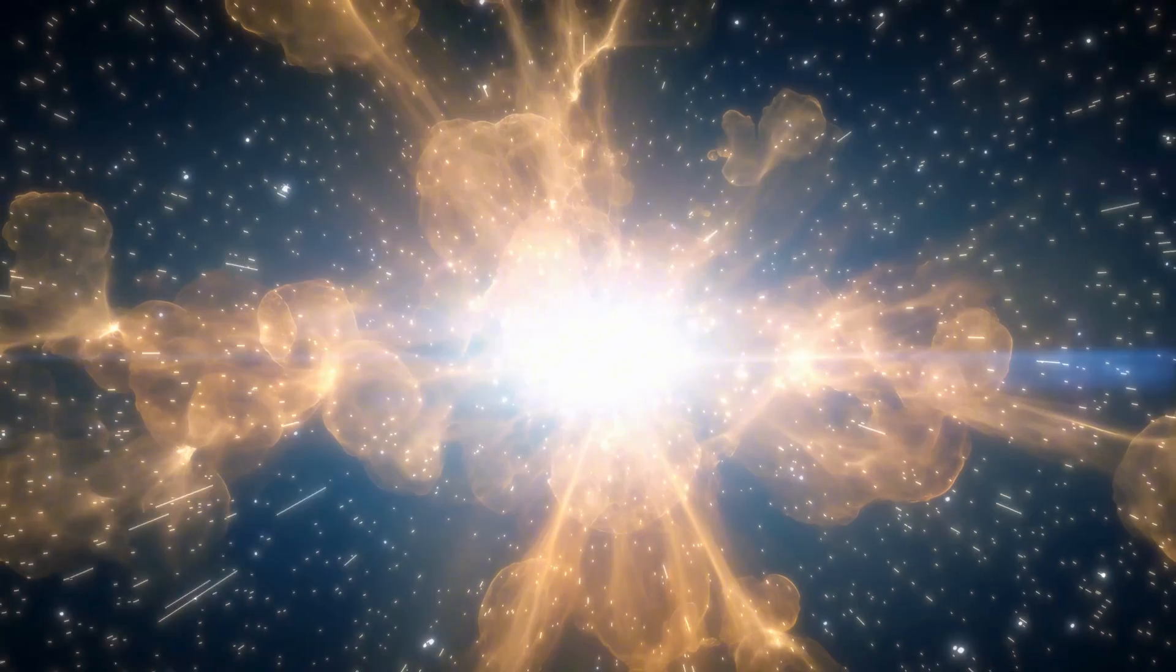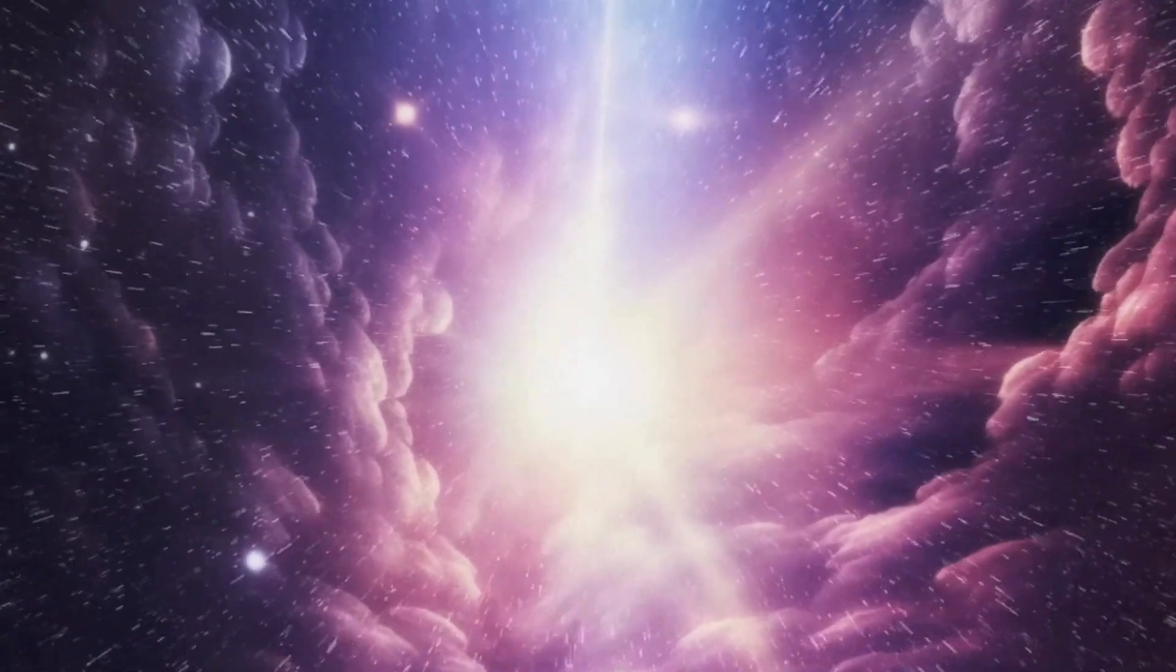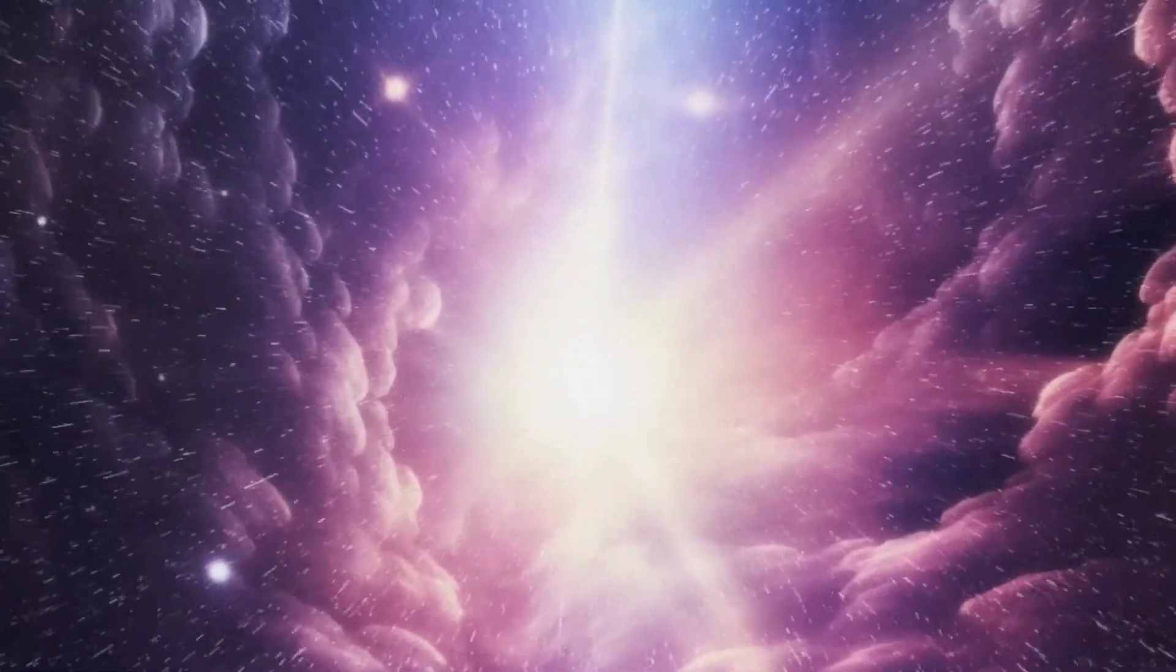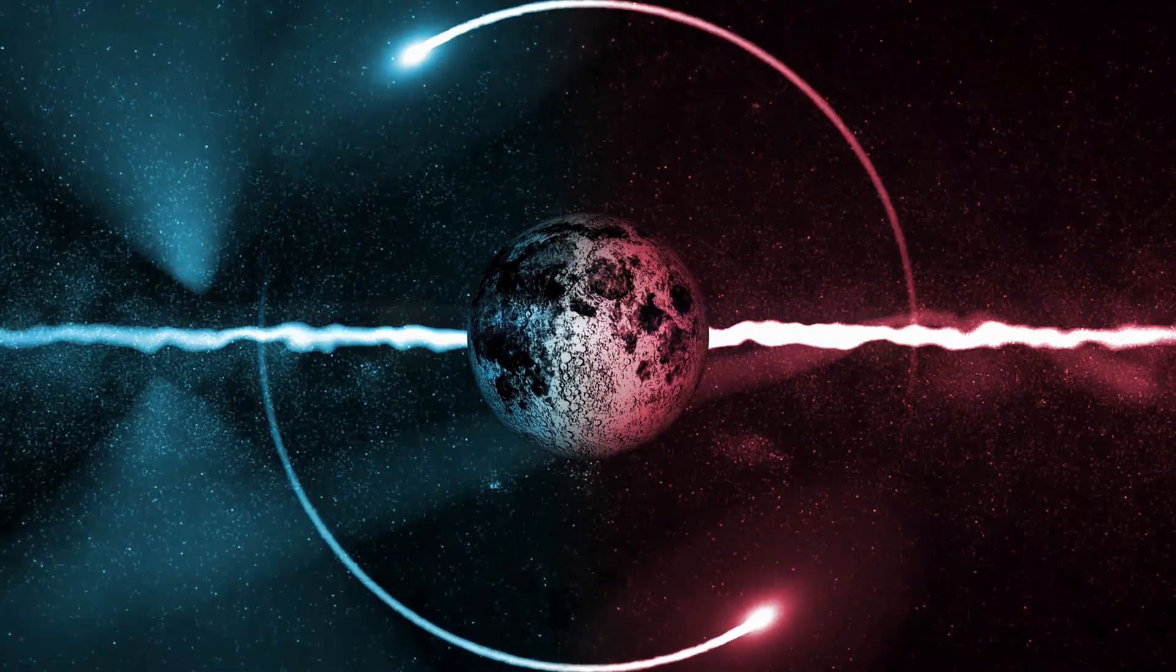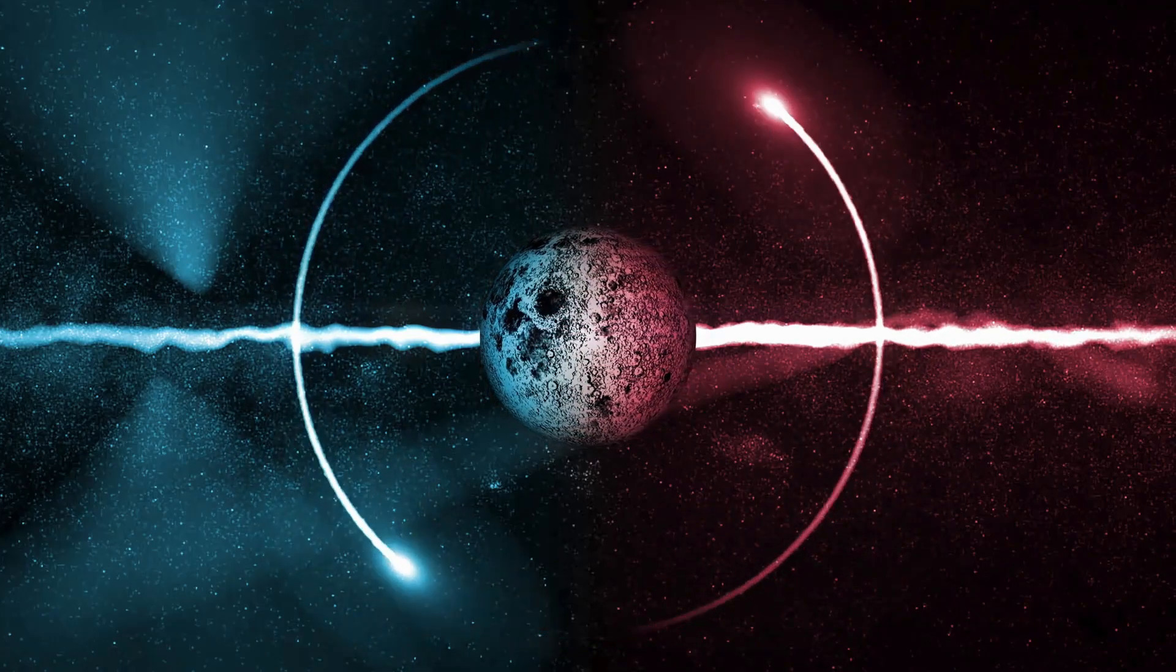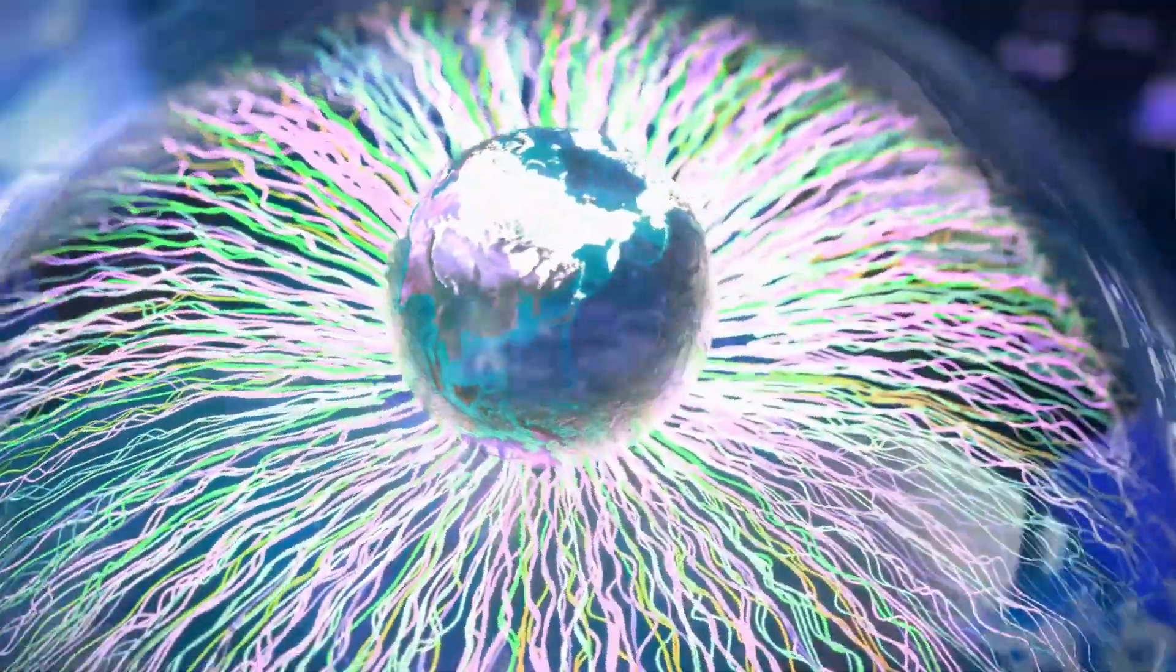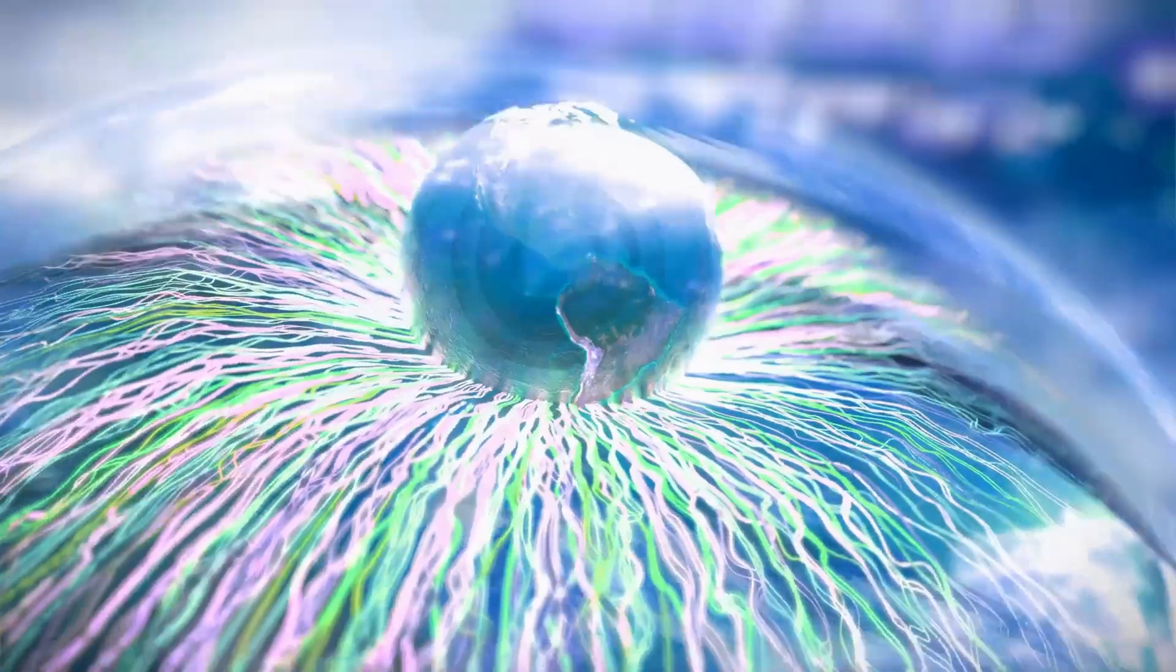The cyclic universe theory has gained attention due to its potential to address some of the contradictions in the Big Bang model, particularly the challenges posed by the discovery of galaxies that seem to have formed earlier than expected. If the universe has undergone previous cycles of expansion and contraction, it's possible that some of these early galaxies were the remnants of a previous cosmic era. While this idea is still speculative, it offers an intriguing alternative and may help explain the unexpected findings from JWST.